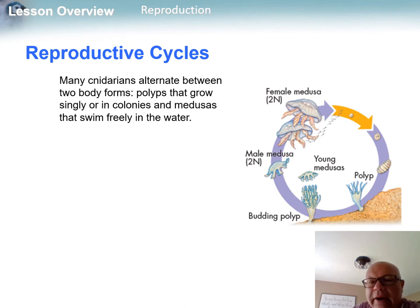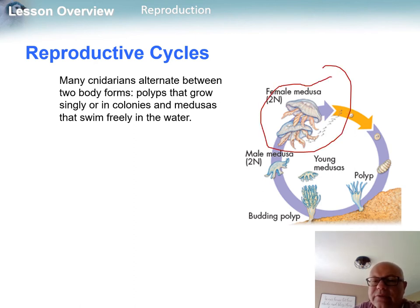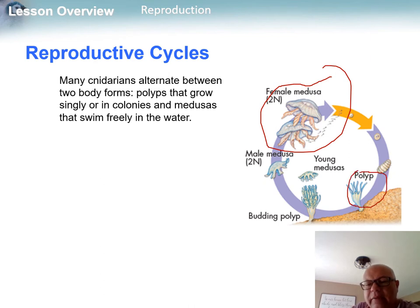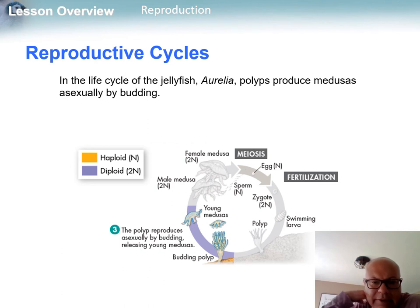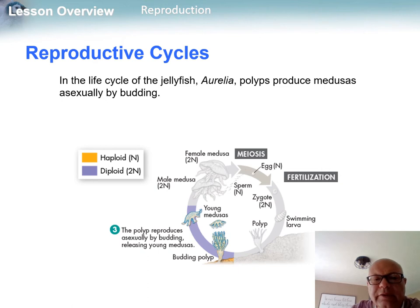The medusa stage is the sexual stage for a jellyfish. When it produces larvae and they land on something, they become a polyp, and the polyp is haploid. The polyp will then bud off using asexual reproduction to become a medusa, and then the medusa is where the male and female produce offspring, and the whole cycle continues.